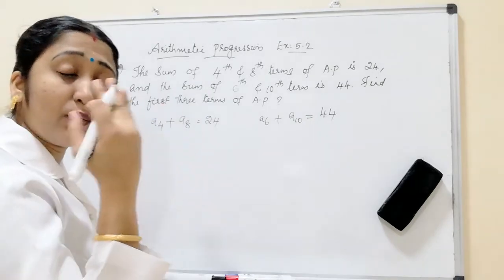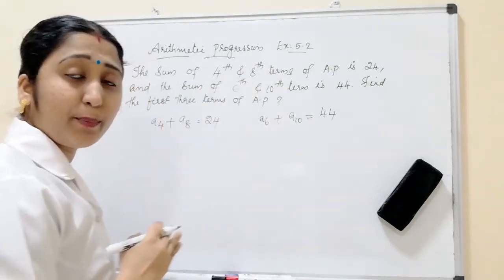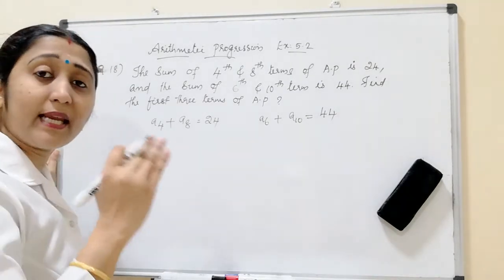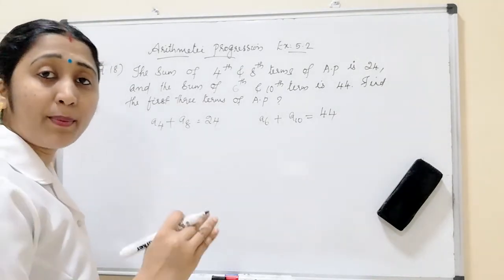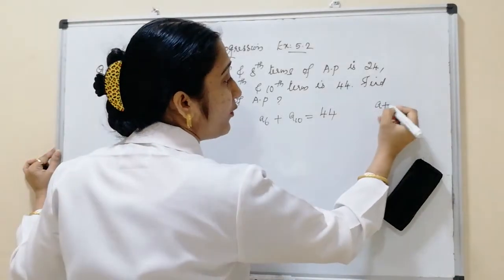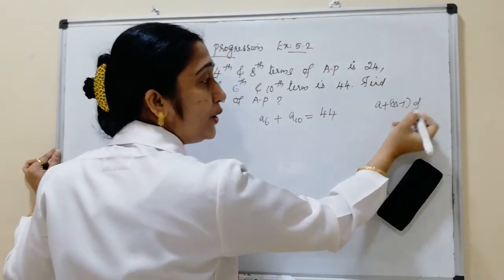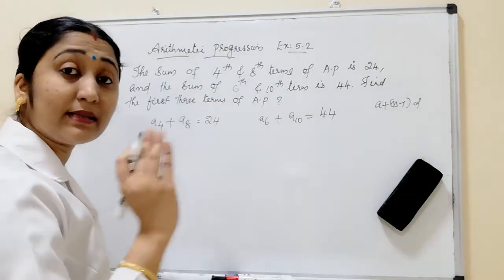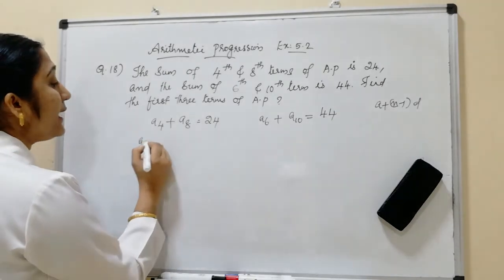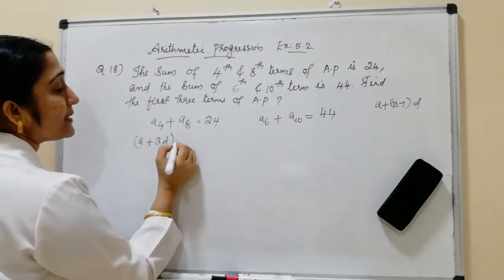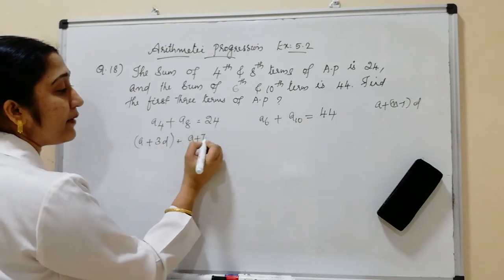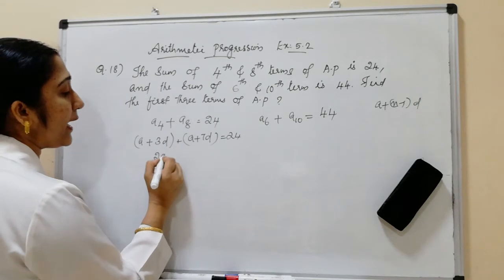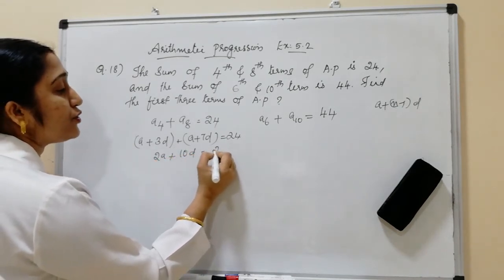From these conditions we have to find the first term A. Using the nth term formula — A plus (N minus 1) into D — A4 means A plus 3D, and A8 means A plus 7D. So A4 plus A8 gives us 2A plus 10D, which is equal to 24.